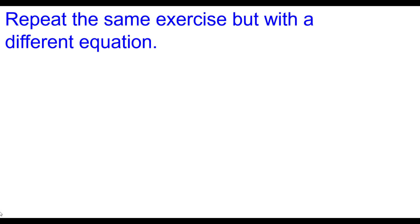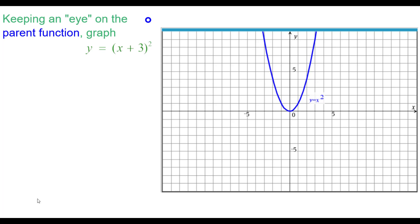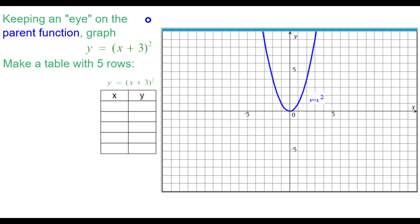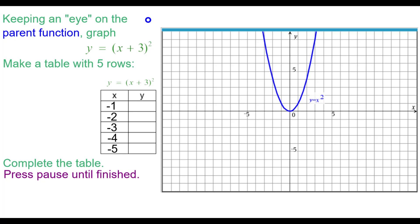We're going to repeat the same exercise with a different equation. Keeping an eye on y equals x squared as the parent function, let's graph y equals the quantity of x plus 3, squared. This time we use a table with five rows using these values for x. Here are the values we came up with and how we got them.